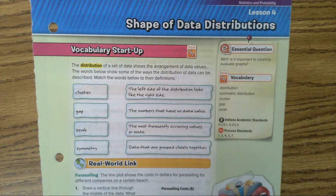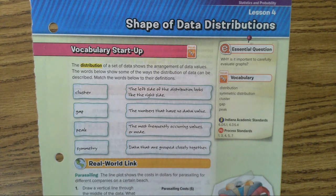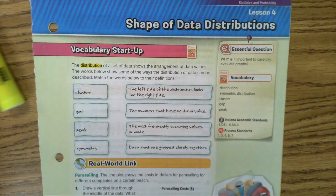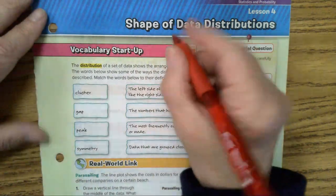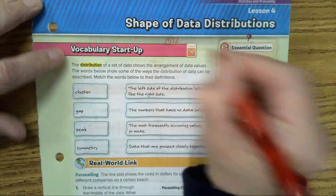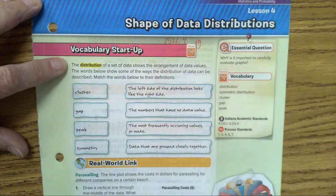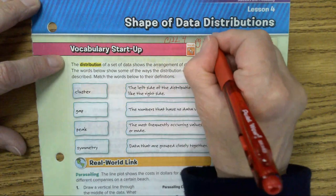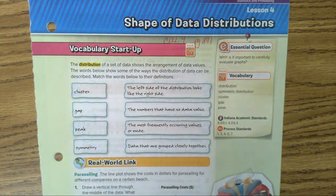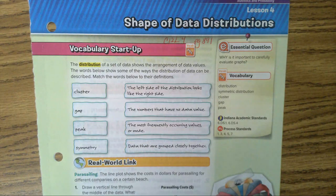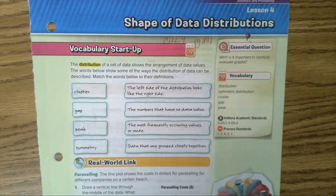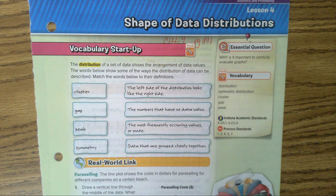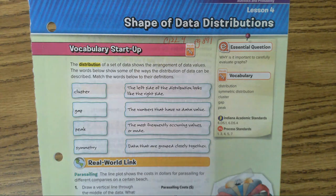This is Mrs. Robertson and today we're going to do Lesson 4 located on page 891 of Chapter 12. So this is Chapter 12, Lesson 4, page 891. It says the distribution of a set of data shows the arrangement of data values. The words below show some of the ways the distribution of data can be described. Now you need to match the word with the meaning.